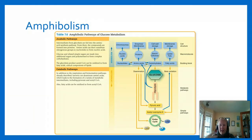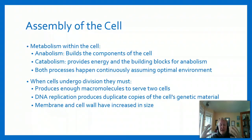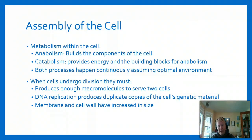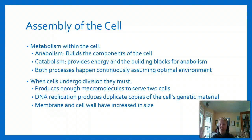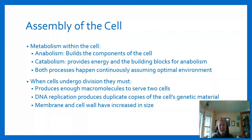To review key terms: anabolism builds the components of the cell, while catabolism provides energy and building blocks from breaking down molecules that can be used in anabolic processes. Both processes happen continuously assuming the cell is in an optimal environment. When everything is built up, the cell undergoes division, which requires producing enough macromolecules for two cells - including replicating all DNA and doubling the cell membrane.